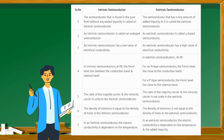Number 5: The ratio of the majority carrier and the minority carrier is unity in the intrinsic semiconductor. The ratio of the majority carrier and the minority carrier is not unity in the extrinsic semiconductor. Number 6: The density of electrons is equal to the density of holes in the intrinsic semiconductor. The density of electrons is not equal to the density of holes in the extrinsic semiconductor.